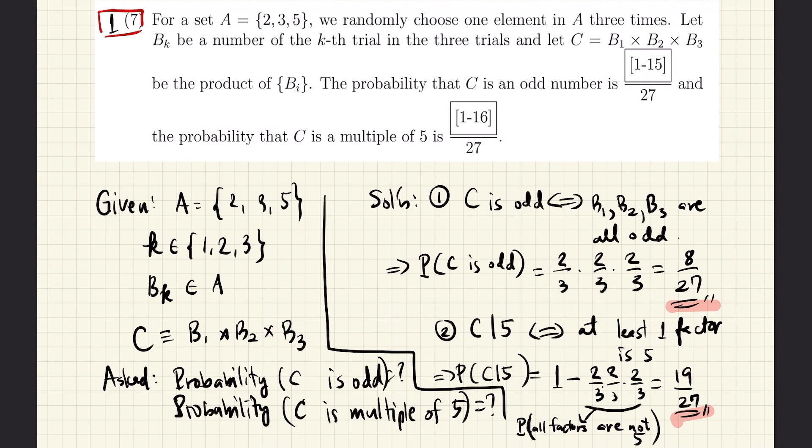And for the third trial, it's the same condition, and so the probability of picking 3 or 5 is again 2 thirds. And because B1, B2, and B3 are independently picked, the total probability is the product of their probabilities. And that means we get 2 third times 2 third times 2 third, which is 8 over 27. And that is the probability that we only pick 3 or 5, which will make the final product an odd number.